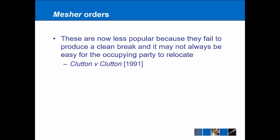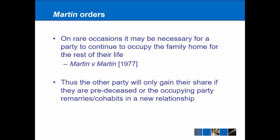However, Mesher orders are not really as popular — they essentially fail to produce the clean break, and it's not always going to be easy for one of the occupying parties to relocate after the property is sold. We saw that in the case of Clutton v Clutton. That case was much more to do with a Martin order, which we're going to look at now. In these cases, it's going to be necessary for one of the parties to continue to occupy the family home for the rest of their life. Perhaps one of the parties has a terminal disease and it's not going to be very fair for them to move out of the family home, and so they would be able to continue living there for the rest of their life.